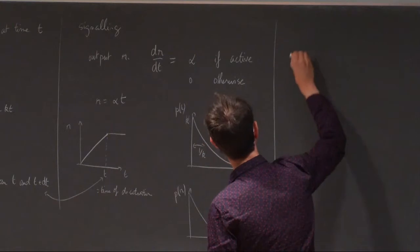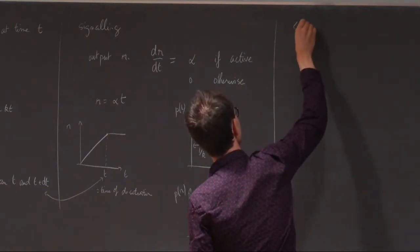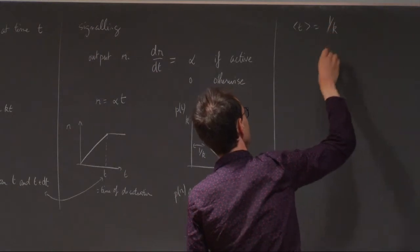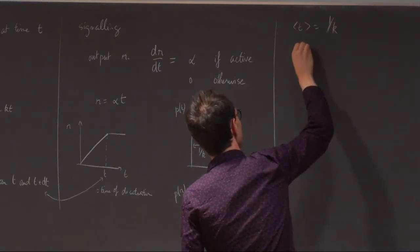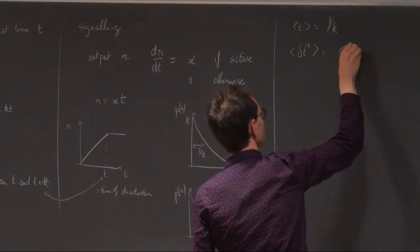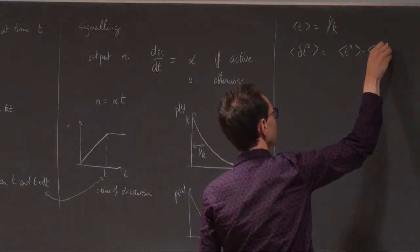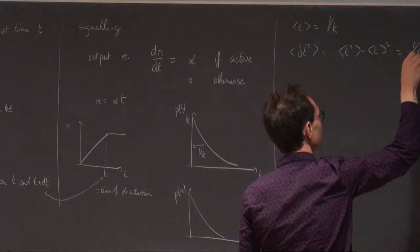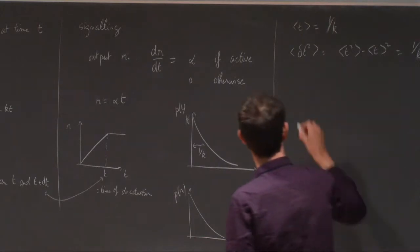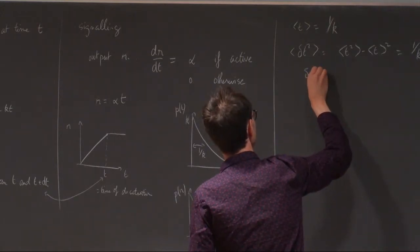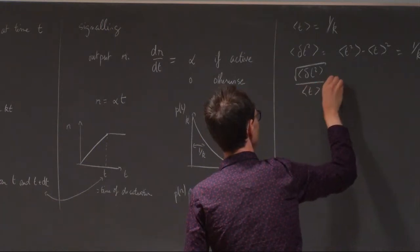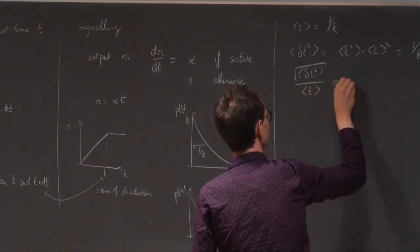What I pointed out last time is that if you look at the average C, then it's 1 over k. And if you look at the variance, which is just t squared, it's 1 over k squared, so that the average fluctuations are equal to 1.